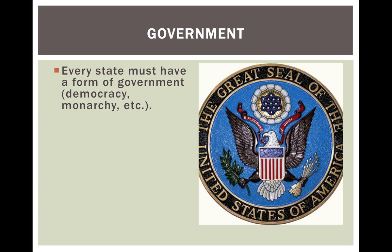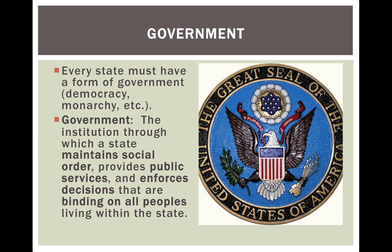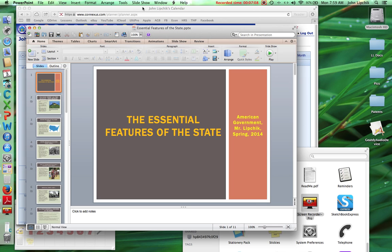Every state must have a form of government, whether it is a democracy, a monarchy, or what have you. Government is defined as the institution through which a state maintains social order, provides public services, and enforces decisions that are binding on all peoples living within the state. That concludes our discussion. Thanks to you for attending, and have a great day.